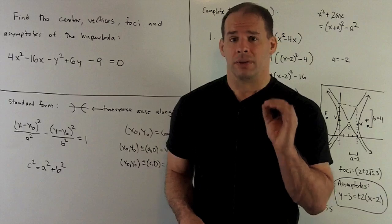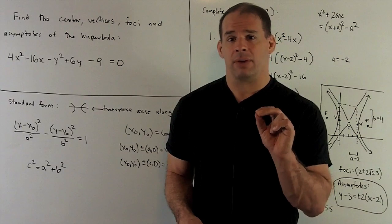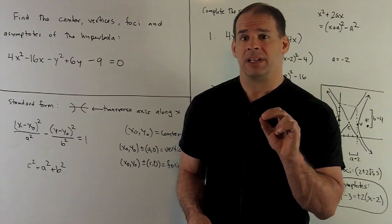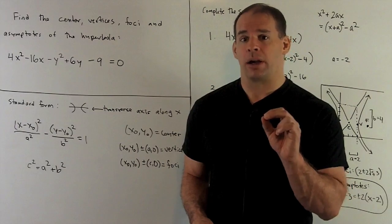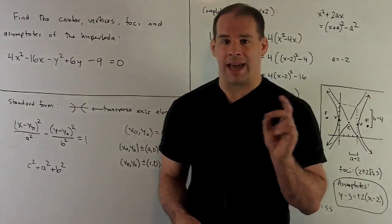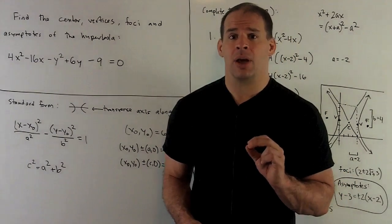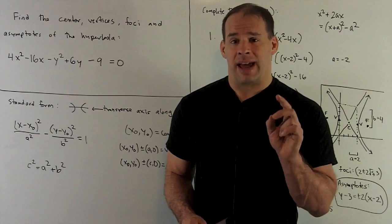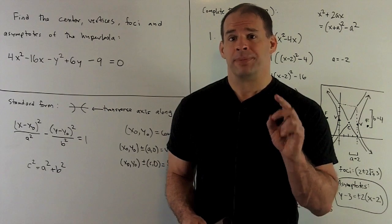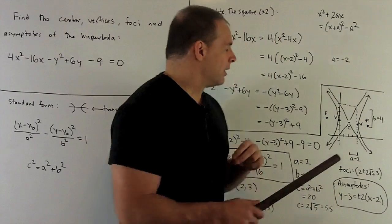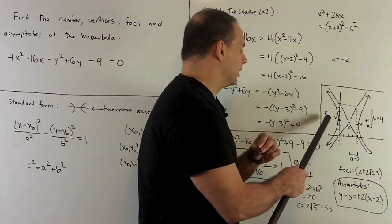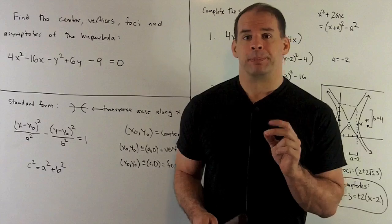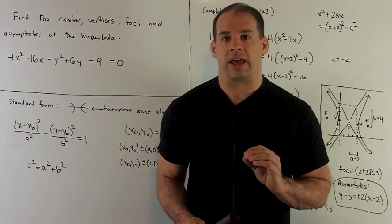Then, for the foci, we're going to need to solve for value c. c² = a² + b². a, b, and c are all positive numbers. Once I have c, same idea, I take the center, and then I add ±c to the x value. That will give us points here and here. Asymptotes, we'll save for the end.